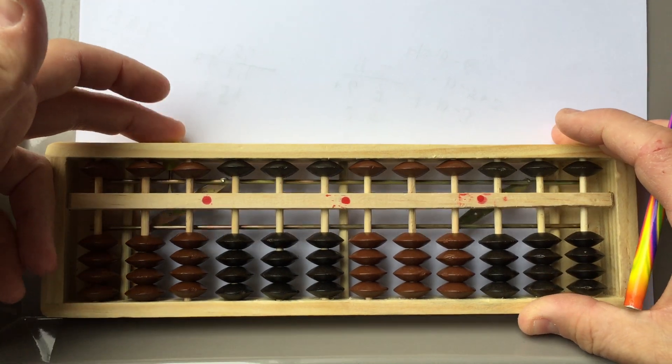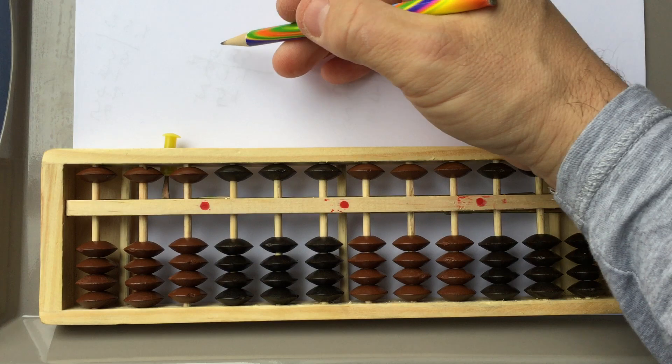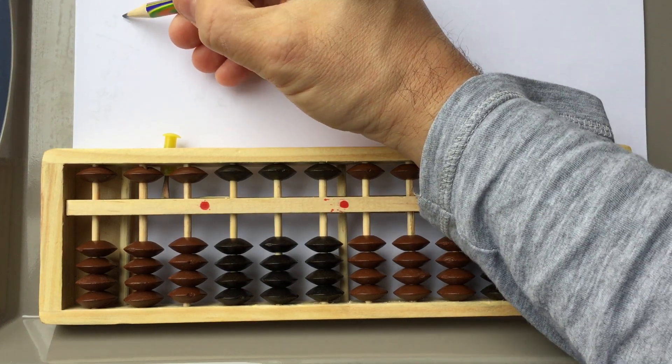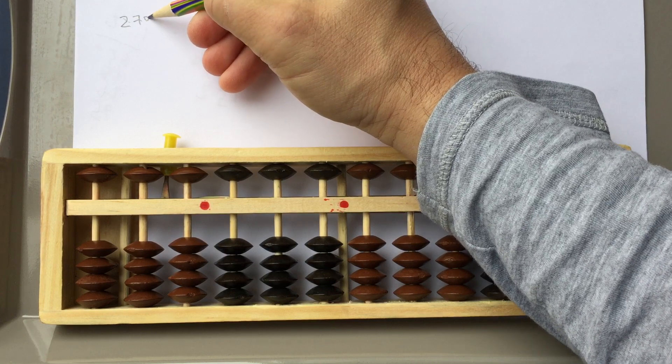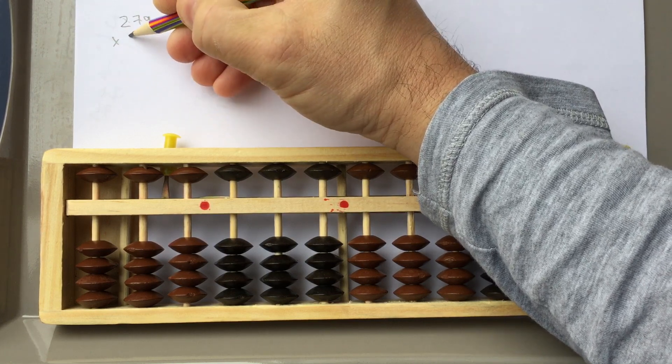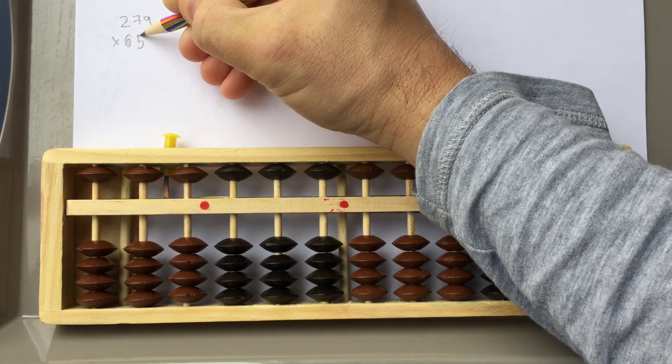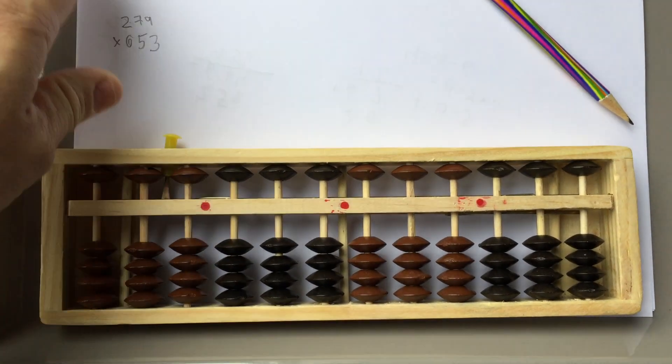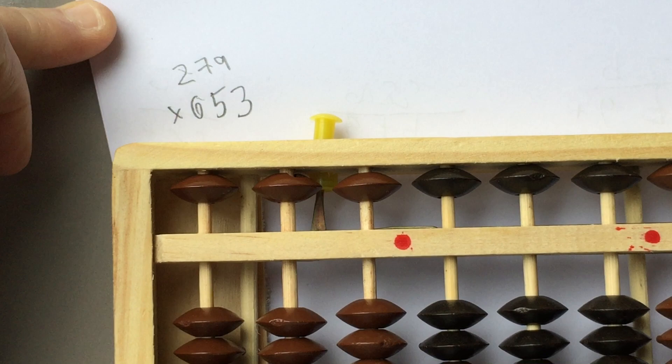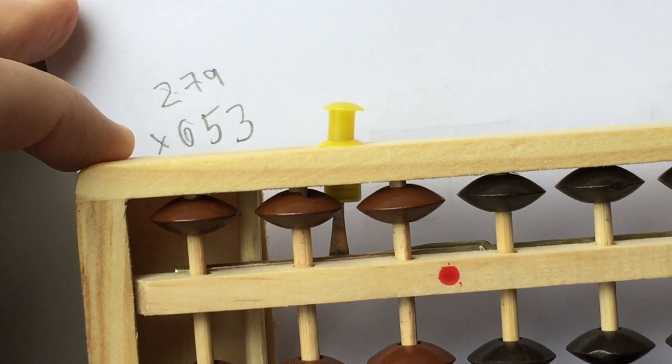So we're gonna just, as an example, multiply two three-digit numbers. Let's just randomly come up with something. I'll say 279 times 653, let's say.